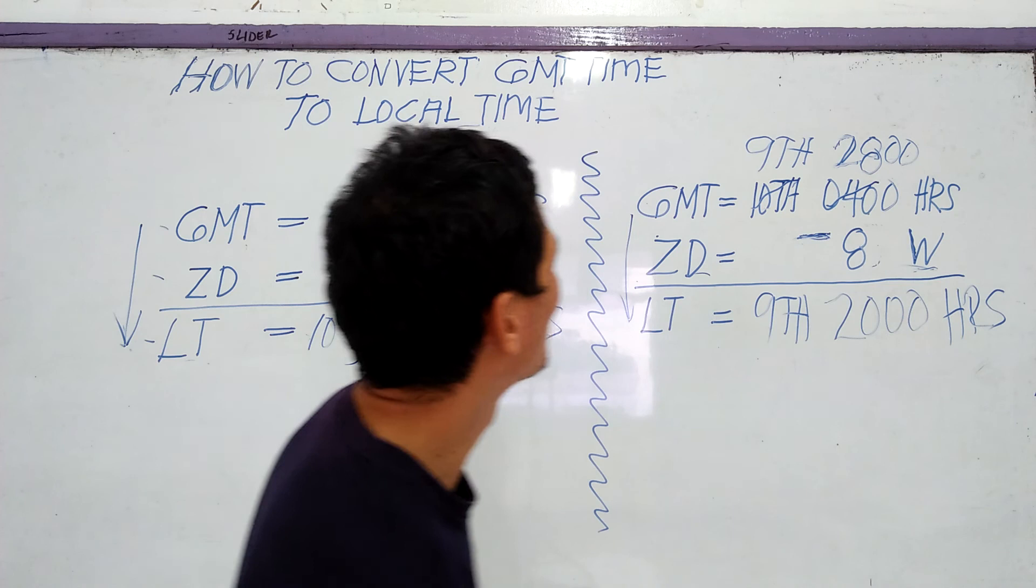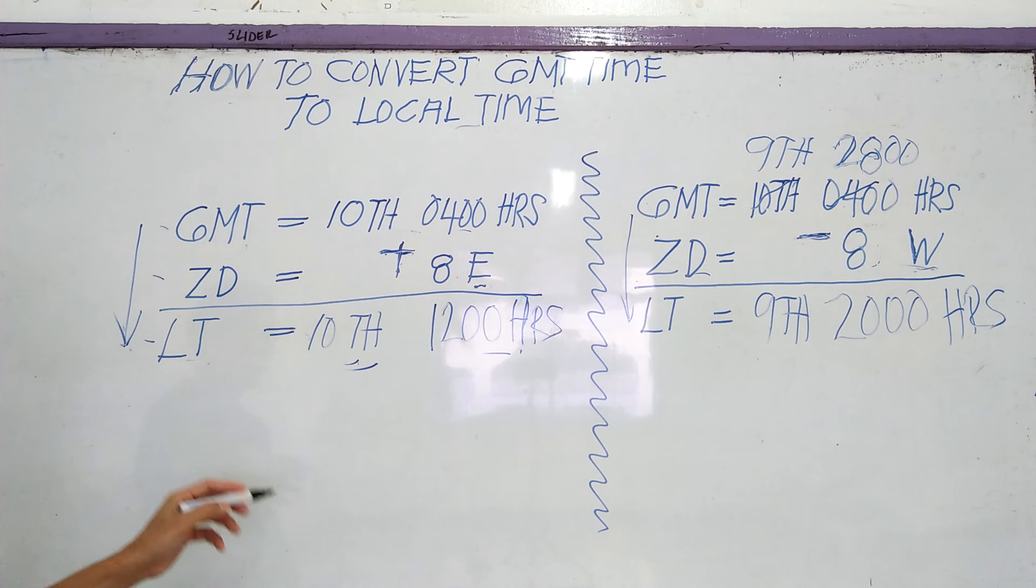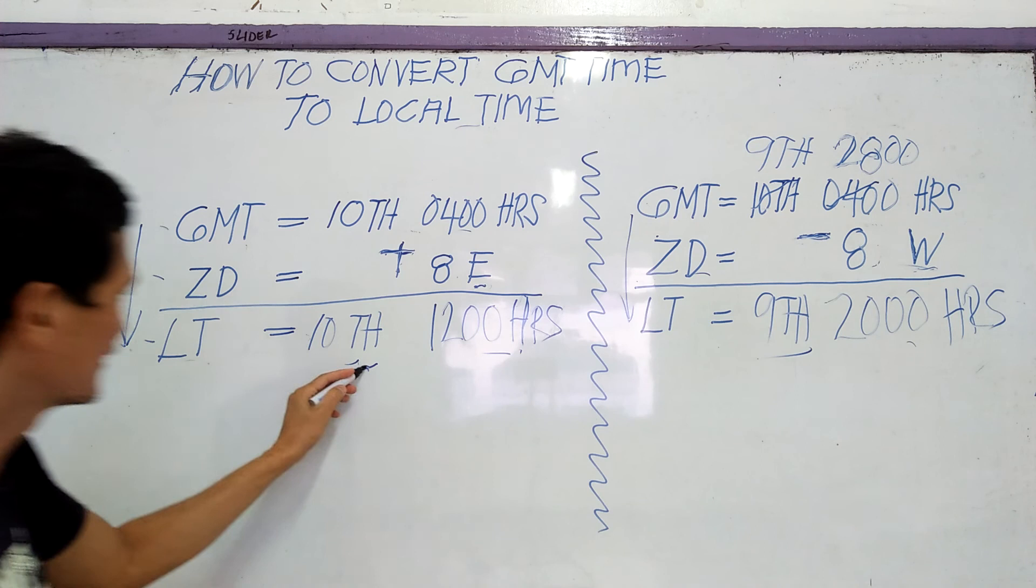So east longitude is advanced to west longitude. 9, 7, 10.